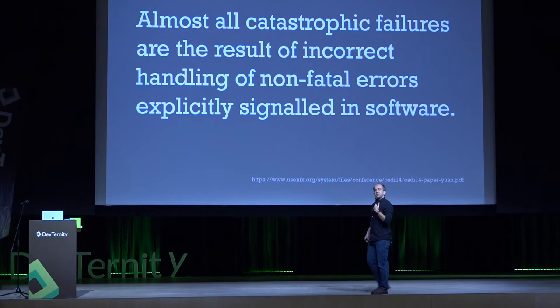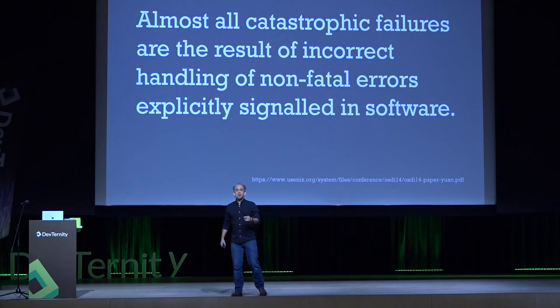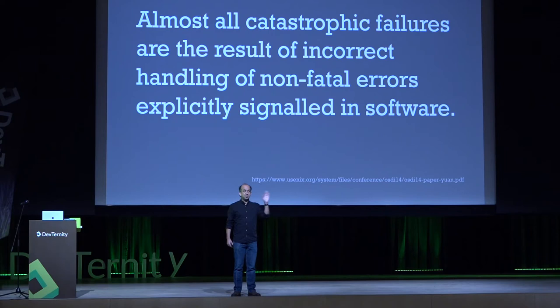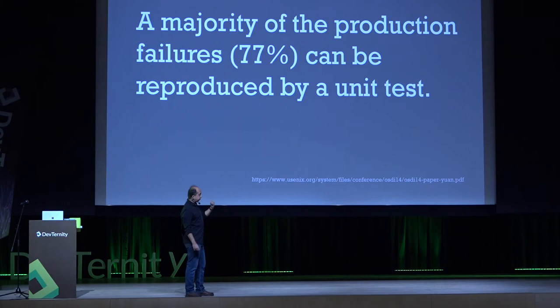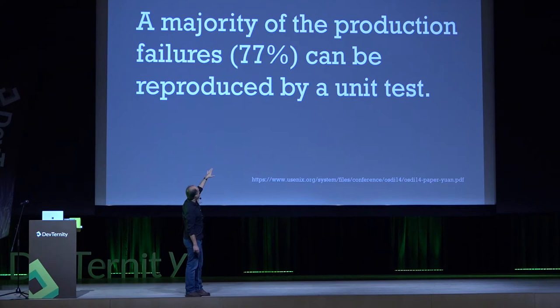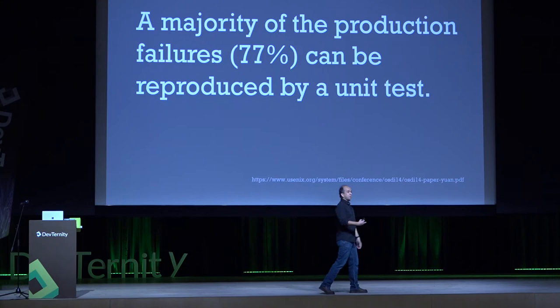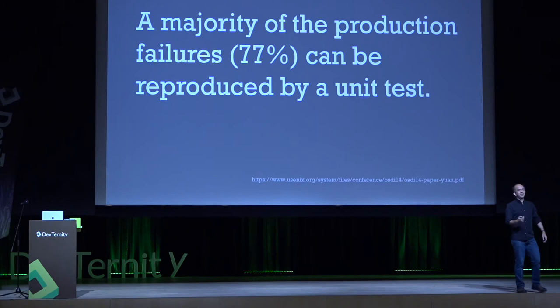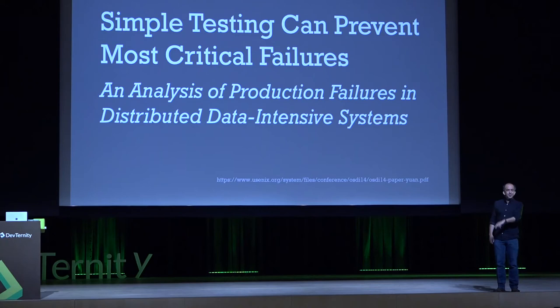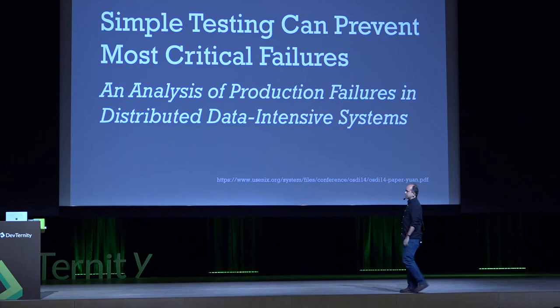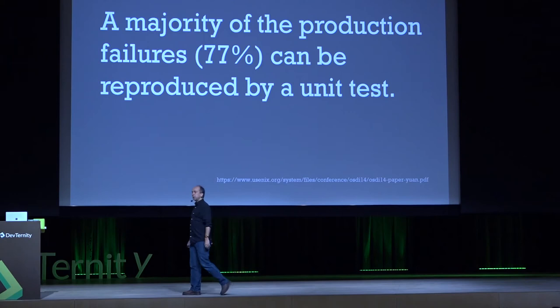We look at something and say, that's not very probable. But risk is not simply probability — it's exposure to the probability. Loss of mission is pretty major. And risk is a compounded problem. A majority of production failures — 77%, so three quarters — can be reproduced by a unit test. When somebody said this doesn't work for real distributed development, I pointed out it comes from a paper about distributed systems. Statistically speaking, unless you're doing a really, really good job, most of the things you think you can't test are testable.